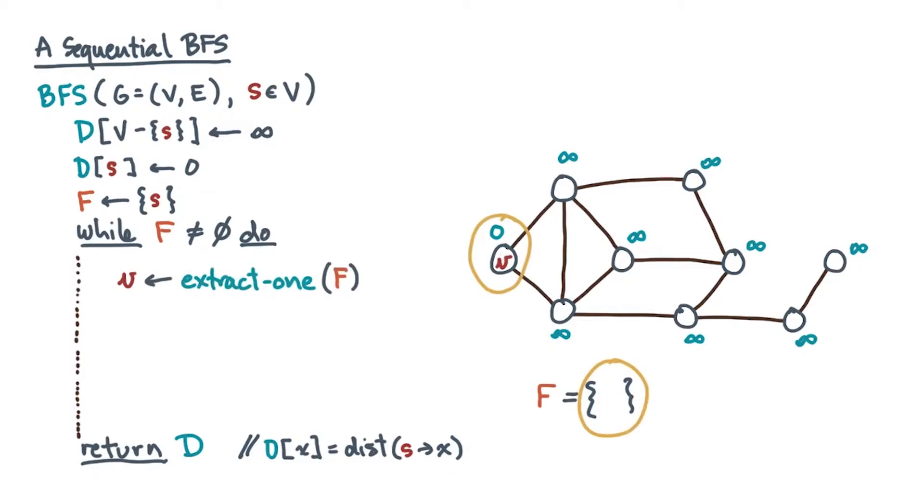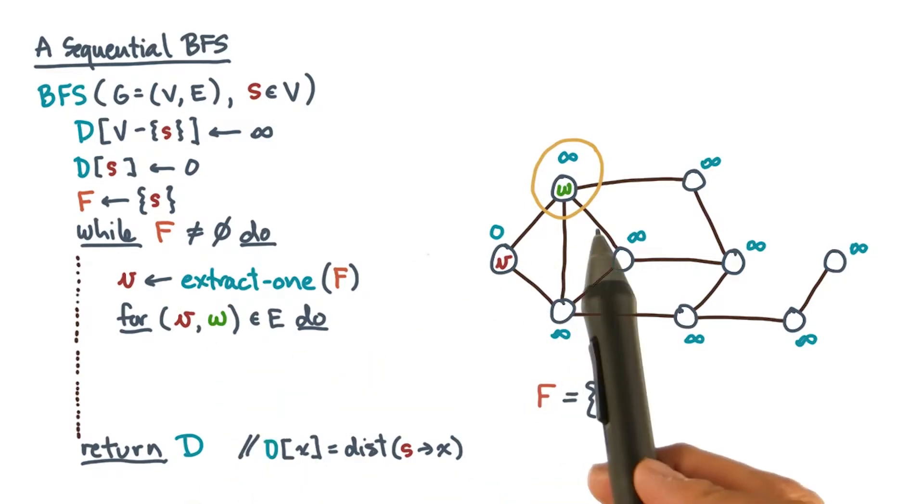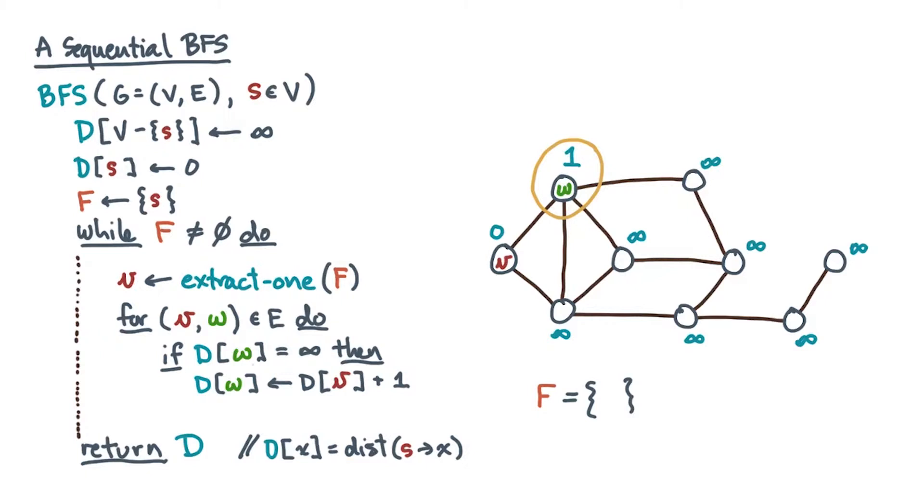It first extracts an unvisited vertex v. It then loops over all of v's neighbors. Let's call a given neighbor w. If w does not have a distance yet, meaning its distance is set to infinity, then we'll update its distance to be the distance of v plus 1, since w is just one edge away from v.